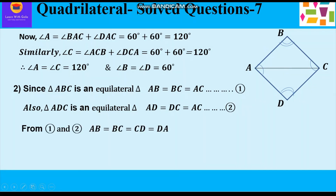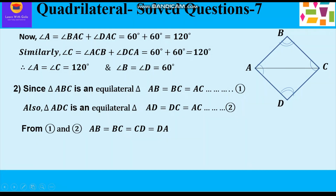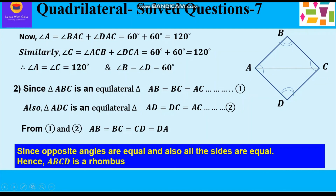That is, all the sides of this quadrilateral are equal to each other. Since opposite angles are also equal — angle A = angle C = 120 degrees and angle B = angle D = 60 degrees — and further all sides are also equal, hence we can say that ABCD is a rhombus.